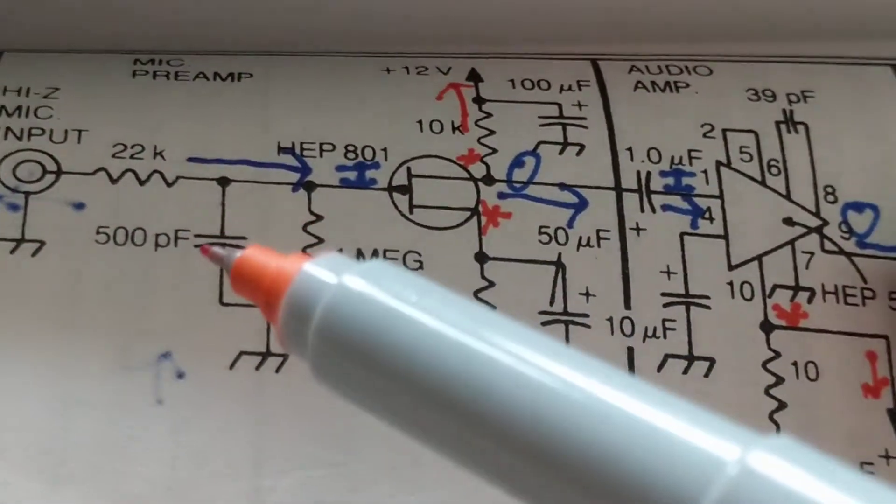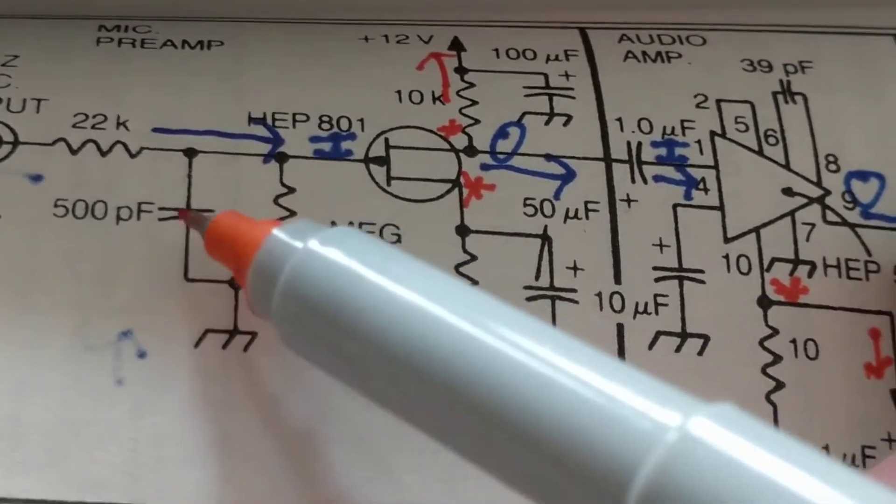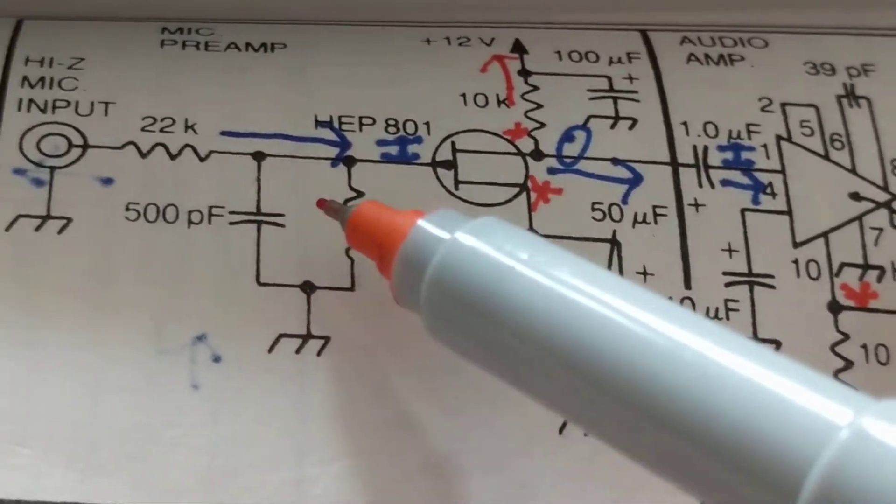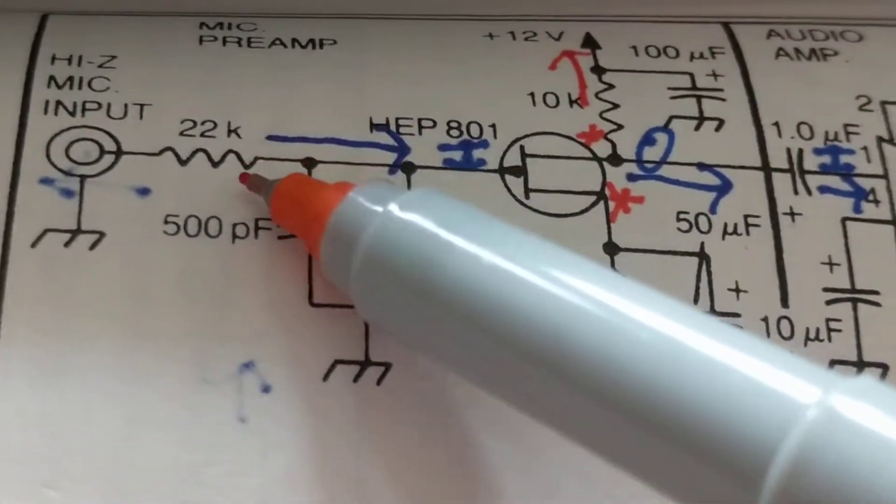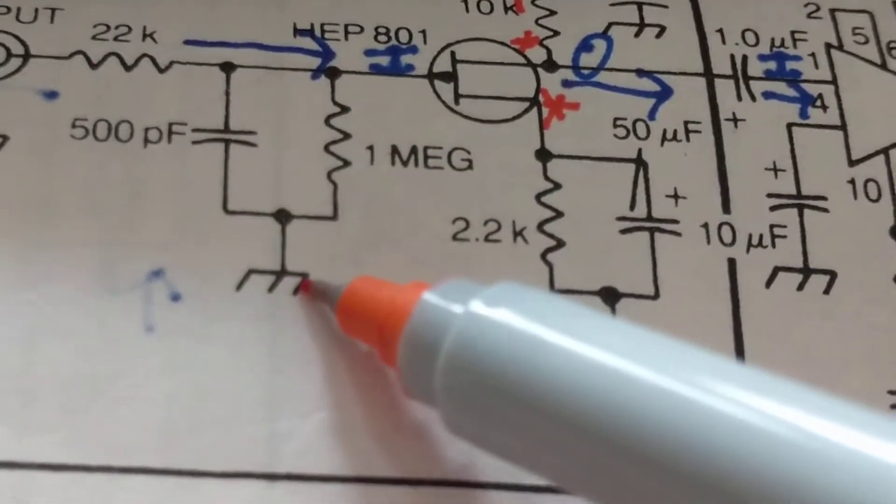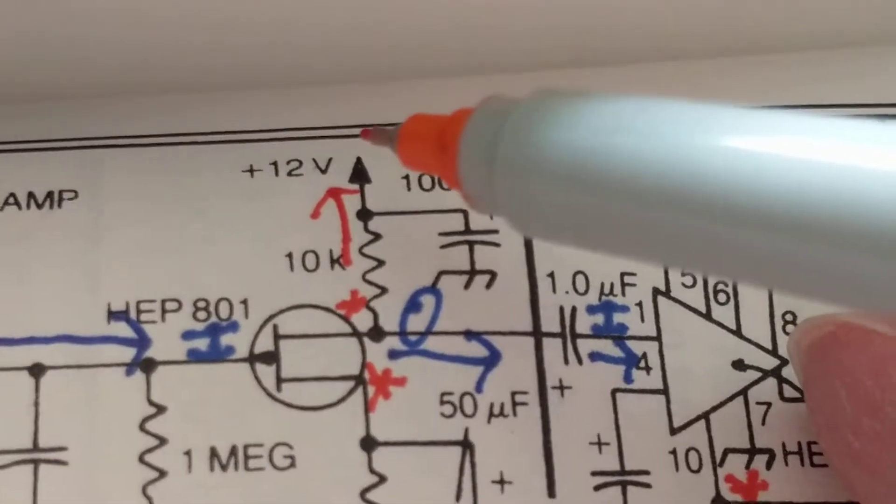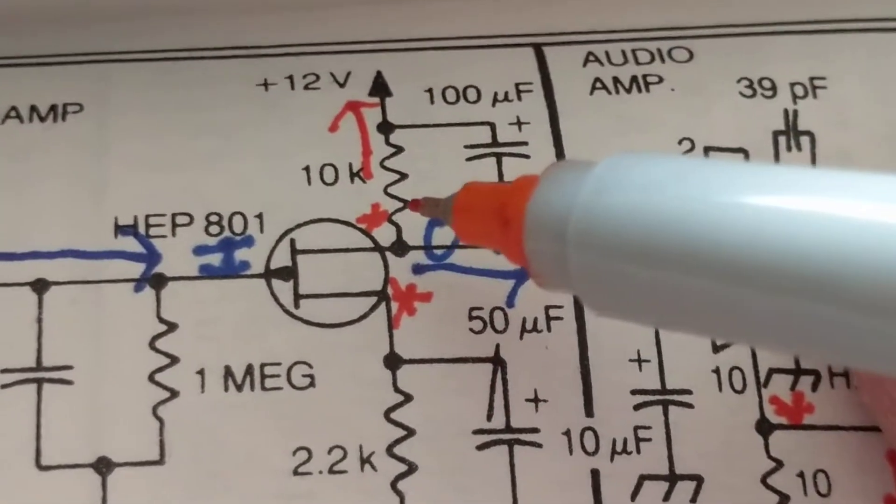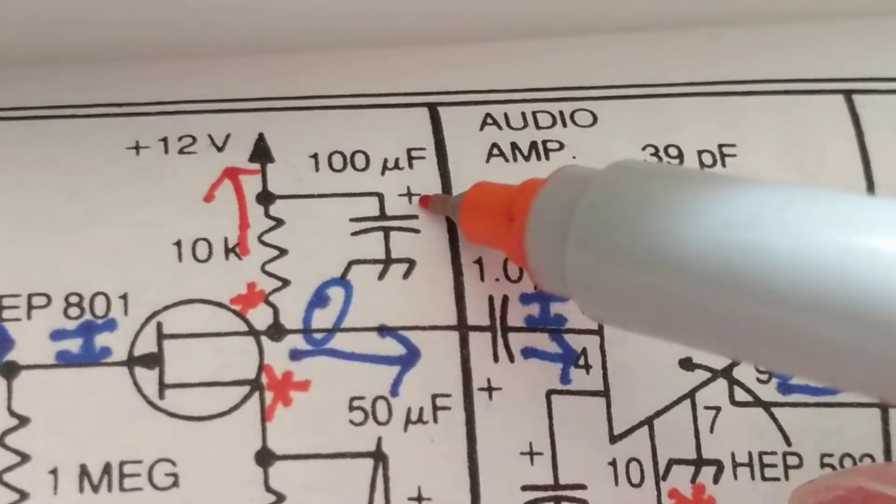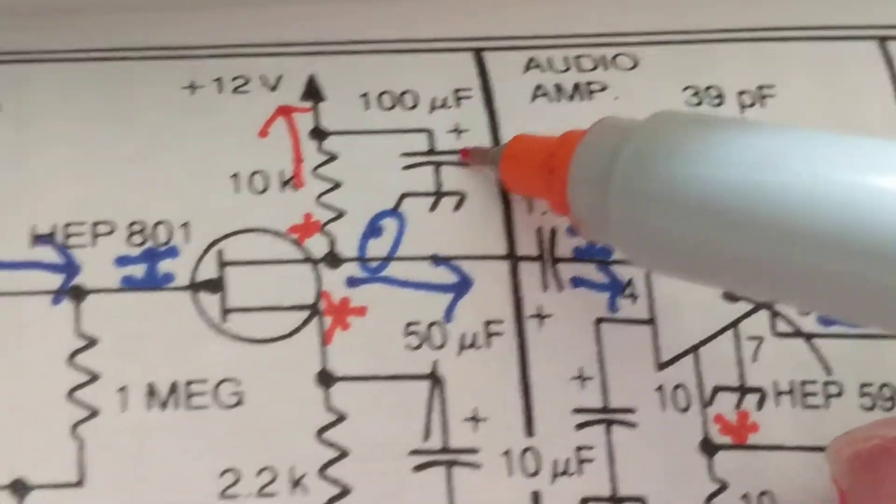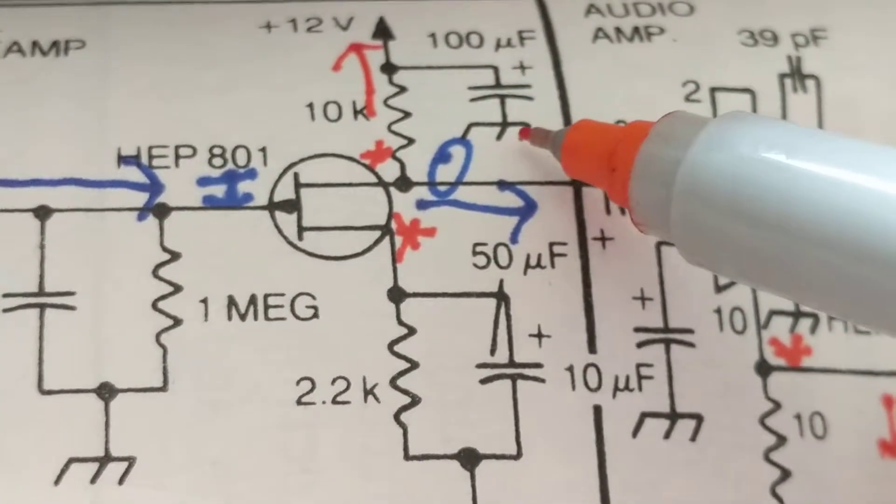Let's just start off with the schematic simple. So you see this? This tells me the value of this capacitor. This is not polarized, it's not electrolytic. It could be ceramic, it could be anything. This tells me the value of this resistor. This tells me the value of this resistor. This tells me that they both go to - this is a ground, a chassis ground.